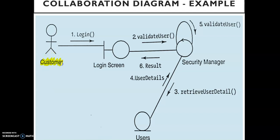This customer first interacts with the login screen. The login screen and the customer are both connected with each other, and to show the connection or the link we use a solid line. The login screen is the GUI, and for that we have this boundary symbol. The login screen is actually your interface, but behind it you have your controller — your code.